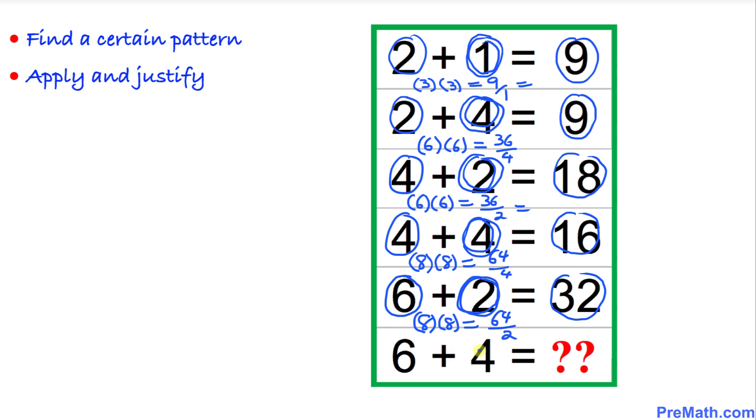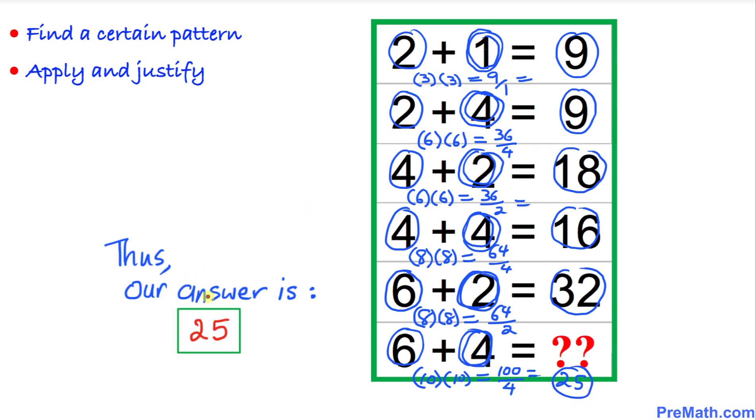And finally we are going to apply the same analogy on this 6 and 4. Let's add them: 6 plus 4 is going to be 10. And then I'm going to multiply 10 times 10 itself, which is going to give us 100, divided by this second number which is 4. And that is going to give us 25.